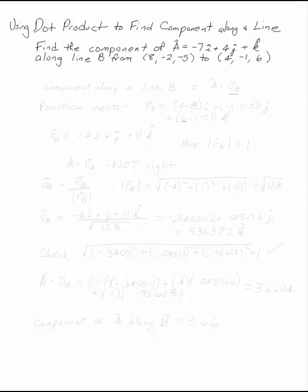Find the component of A = -7i + 4j + k along the line B from the point (8, -2, -5) to (4, -1, 6).